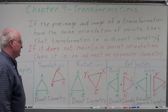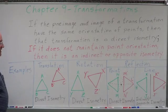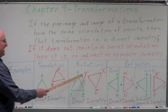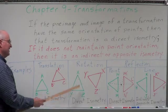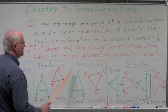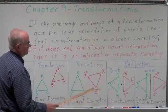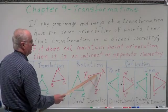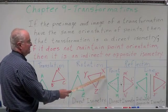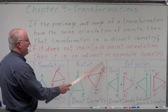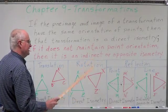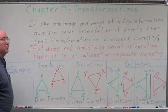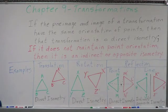Let's look at a rotation. I have triangle XYZ. Notice X, Y, and Z — if I go to the left, I have XYZ. I turned that triangle, and now I have X prime, Y prime, Z prime. But still, starting at X and going to the left, I have Y and Z prime — just like on the original. That's maintaining point orientation.